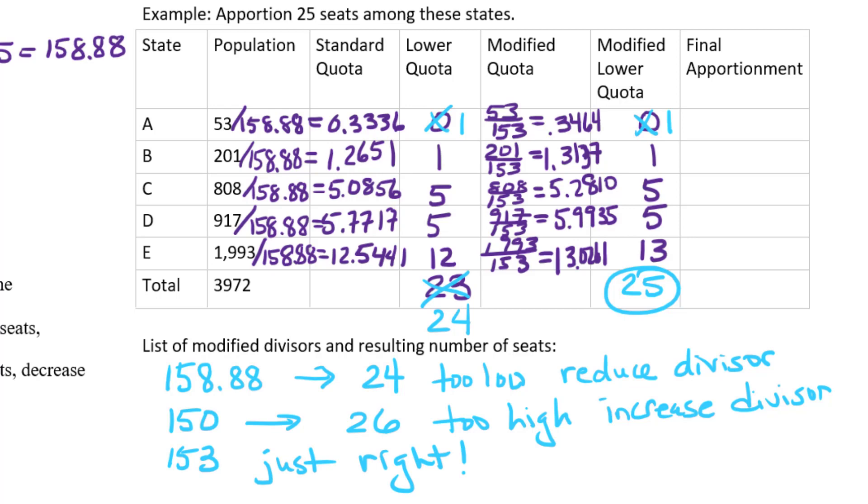By the way, different people may use different divisors and still come up to 25, but the apportionment will be the same. So someone else might have used, say, 153.5, and it might have worked out. But what's important is that we get the correct apportionment in the end.